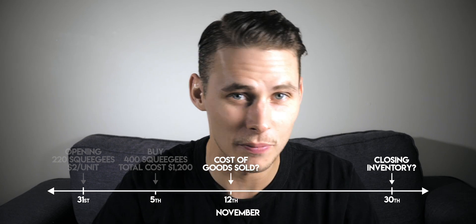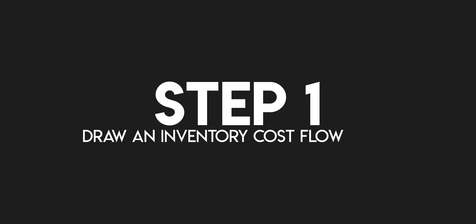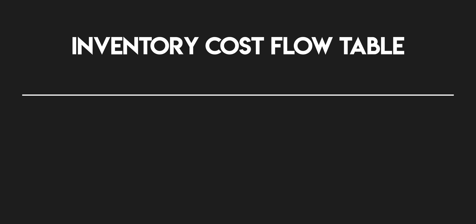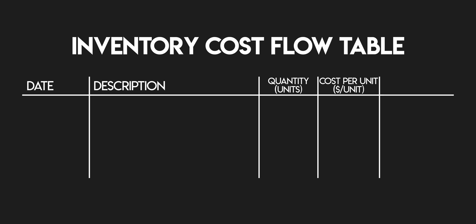It's time for that four step process. Step one: draw an inventory cost flow table. It's a table with five columns — date, description, quantity, cost per unit, and total cost.